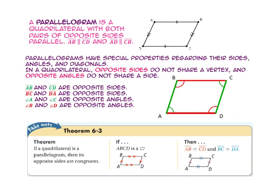A parallelogram is a quadrilateral with both pairs of opposite sides parallel. Notice that side AB is parallel to side DC and side AD is parallel to side BC.